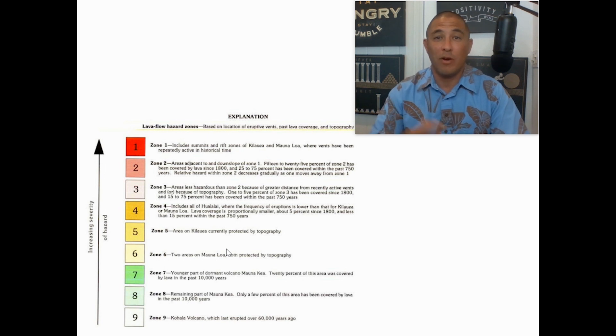You have zone one, which is the actual rift zones of Kilauea and Mauna Loa. Then if you look at zone six, it's two areas on Mauna Loa that are protected by topography. So that is on Mauna Loa, which is the second most active volcano, but it's an area on the south part of the island which is protected by topography, so there's a very low hazard of it having a lava flow.